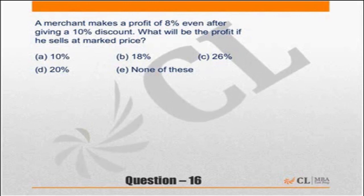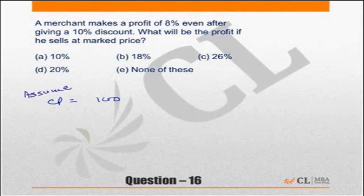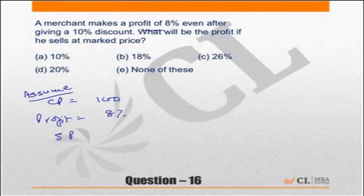Such questions start by assuming the cost price. Let the cost price be 100 — this makes percentage calculations easier. Since the profit is 8%, that means the selling price has to be 108.